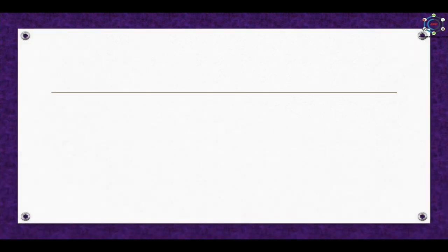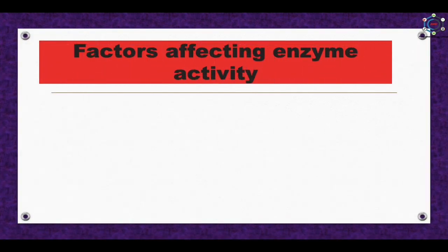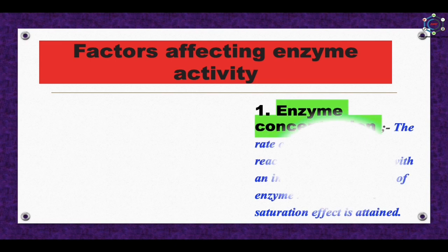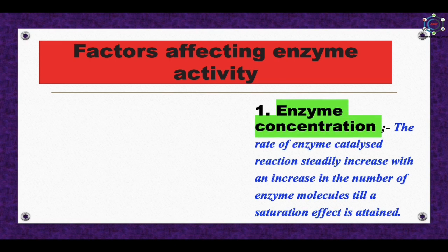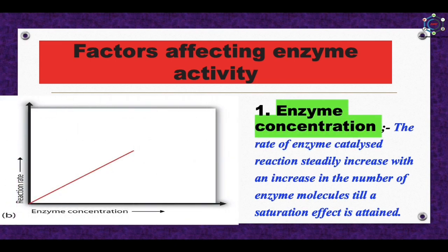Factors affecting enzyme activity: First, enzyme concentration. The rate of an enzyme-catalyzed reaction steadily increases with an increase in the number of enzyme molecules until a saturation effect is attained, as shown in the graph.